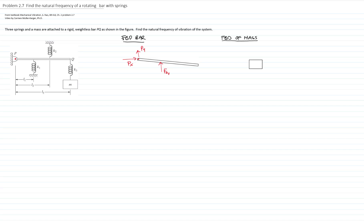Spring 2 is being extended; therefore, the force also goes upwards. Then we have spring 3, which has a relative motion between its two ends. I will call this displacement X and this displacement Y. I will assume that X is greater than Y — I could assume the opposite — just to give a direction to the spring force. If X is greater than Y, the spring is being extended, so the force of spring 3 acts in this direction. Since the bar is weightless, I do not have the force of weight.